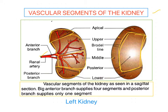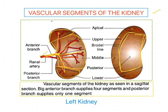The renal artery, which is a branch of the abdominal aorta, divides into a large anterior branch and a small posterior branch shown by dotted lines. The anterior branch supplies four segments, so four segmental branches arise from it, whereas the posterior branch supplies only one segment — that is the posterior segment.